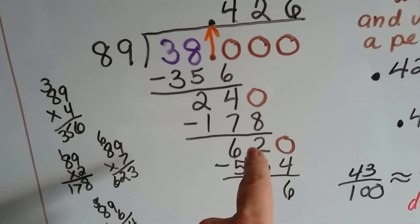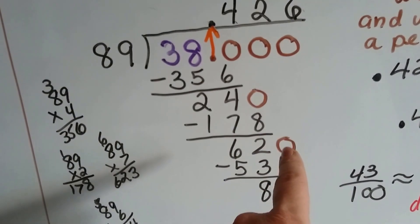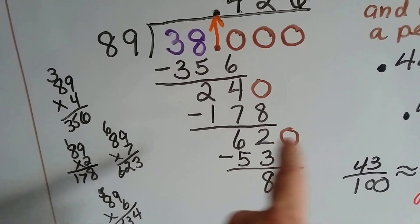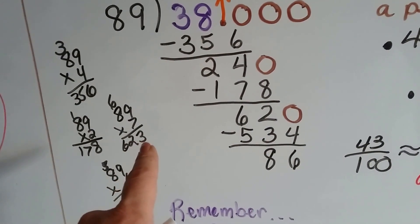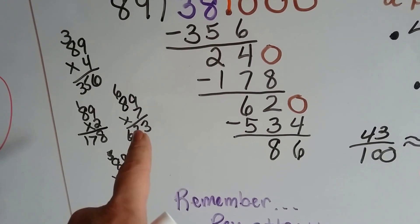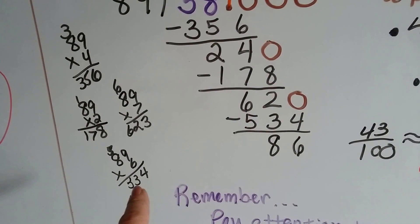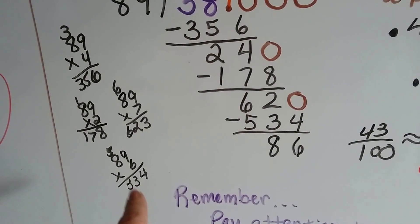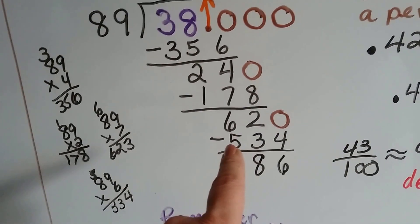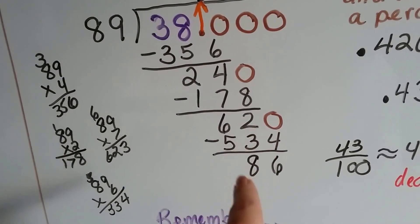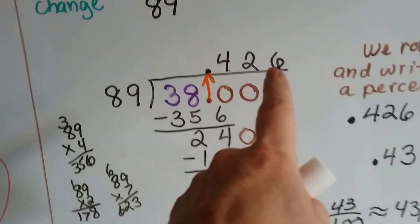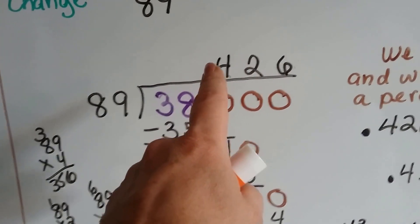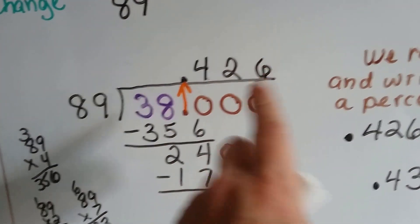Drop that 0 down, and 89 can go into 240. 2 times, 178. So put our 2 up here, put our 178 here. We subtract and get 62. Drop our other 0 here. And now 89 goes into 620. 89 times 7 is 623, so we just missed it. So we've got to go back 1. So we do it by 6 and it's 534. 534 is subtracted and we get an 86. We're looking for a percent, so we don't want to go too far away from that decimal point. Because it means hundredths and we're now in the thousands, so we can stop here.